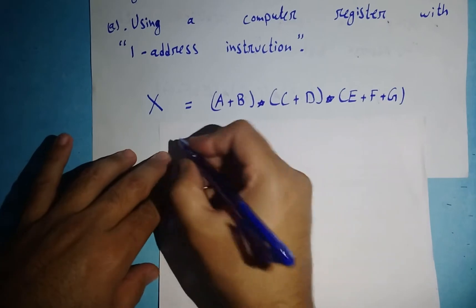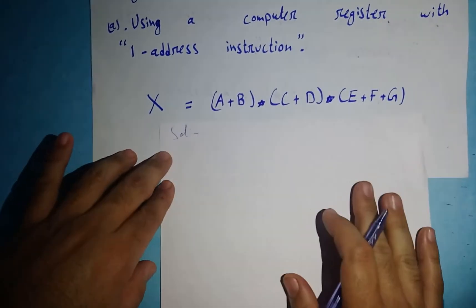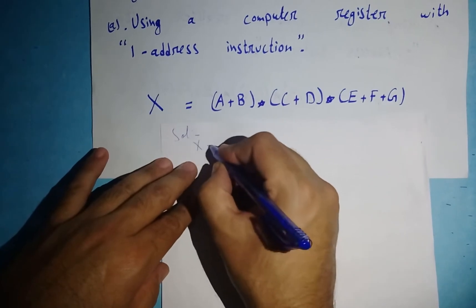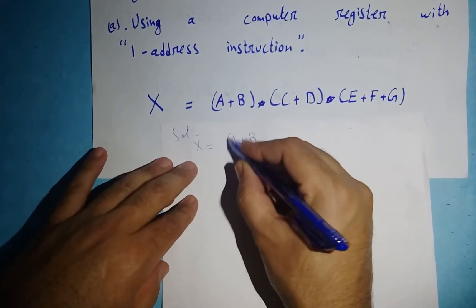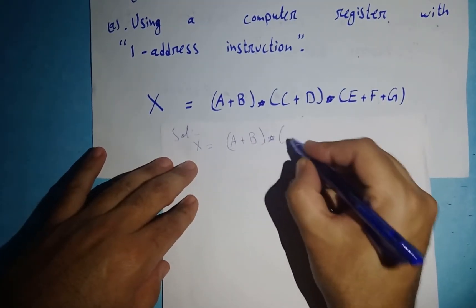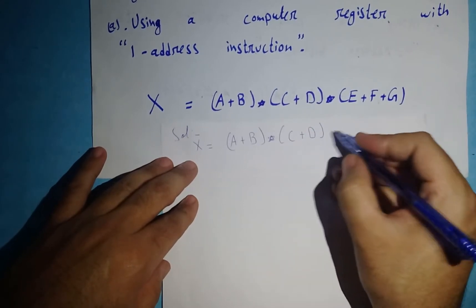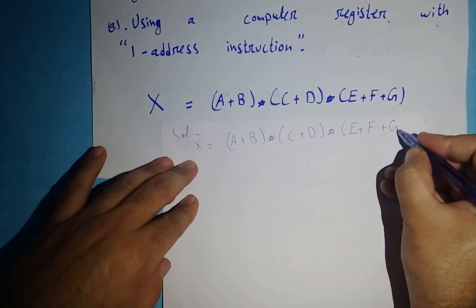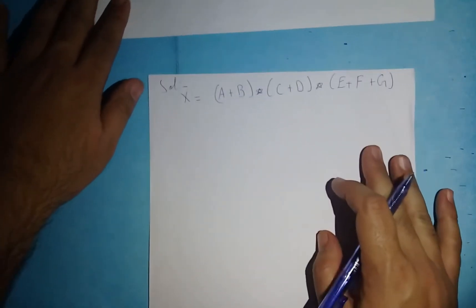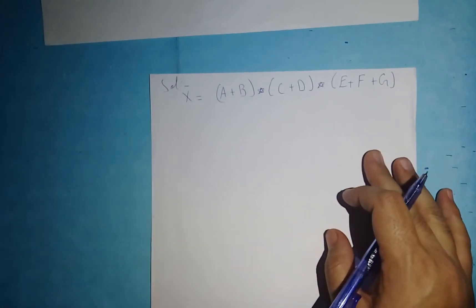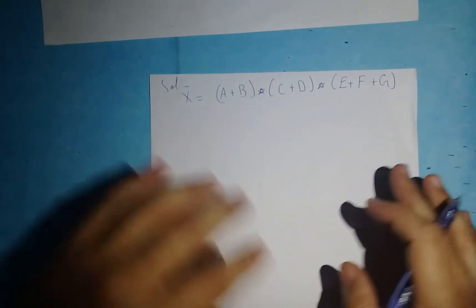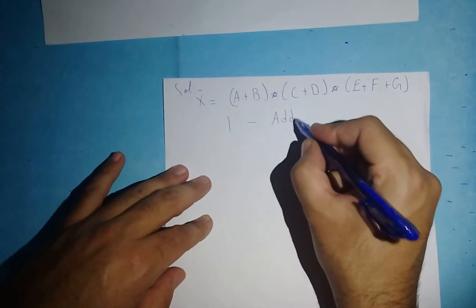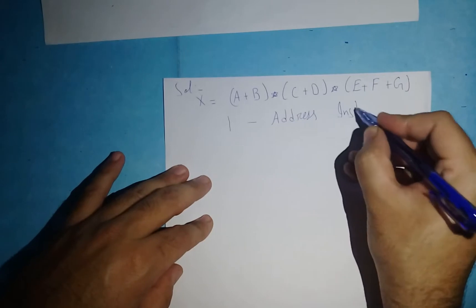First of all, I'm going to write the heading 'Solution.' This is the given arithmetic expression which I've taken. I'm going to write it down here, and on the top I'm giving the heading of 'One Address Instruction.'